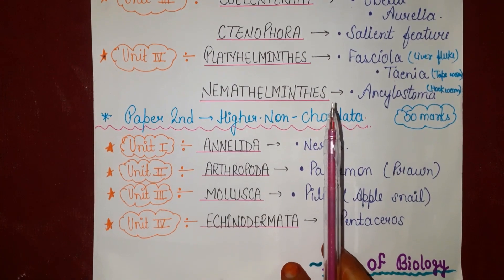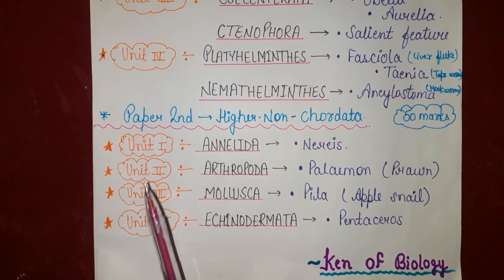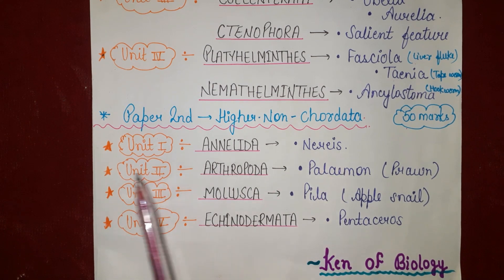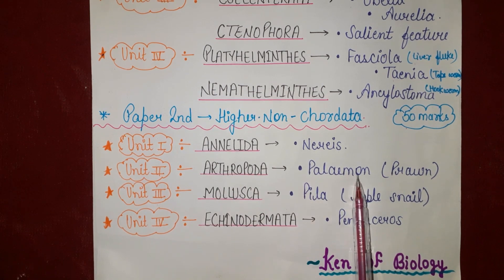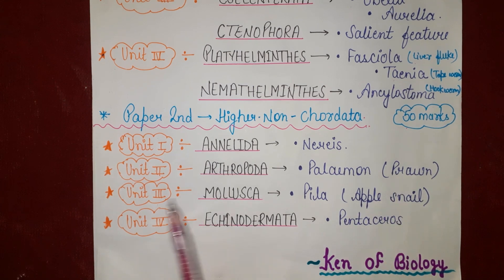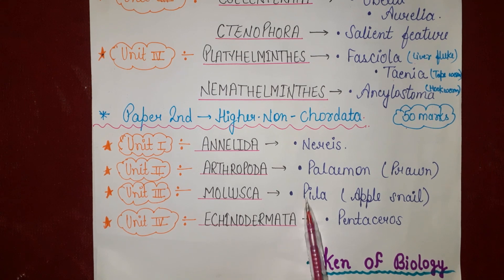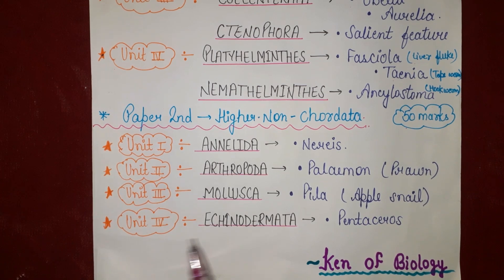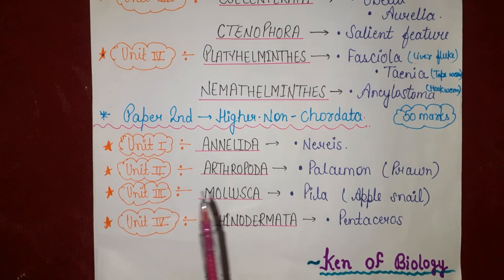Paper 2nd covers Higher Non-Chordata. It also carries 50 marks and is categorized into four units. Unit 1 is Annelida, in which we study about Nereis. Unit 2 is Arthropoda, in which we study about Palaemon, also known as prawn. Unit 3 is Mollusca, in which we study about Pila, also known as apple snail. Unit 4 is Echinodermata, in which we study about Pentaceros. That was our Paper 1st and Paper 2nd syllabus.